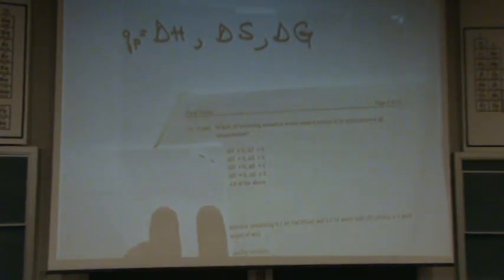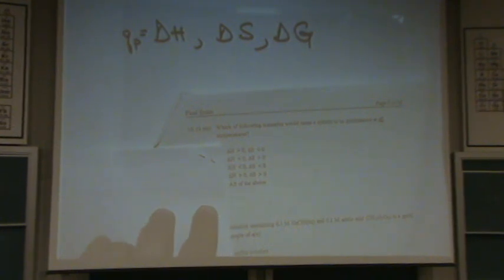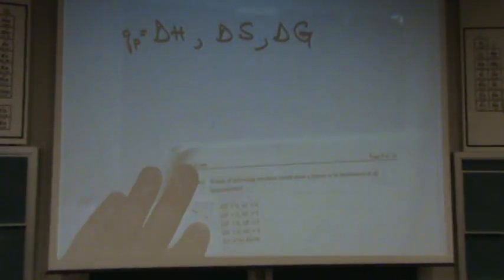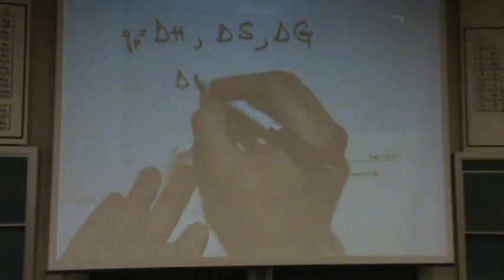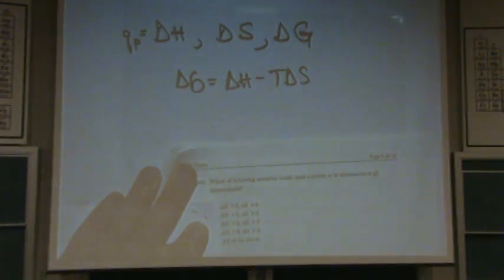Okay, I want to know which of the following scenarios will cause the system to be spontaneous at all temperatures. This is a really common concept question. This is an old final. This one was a tough final, Winter 2005. So let's try this. Spontaneous at all temperatures. When you see one of these questions, you want to think this equation. Delta G is delta H minus T delta S.